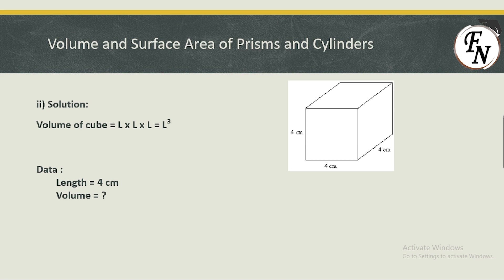When we melt the cuboid, the volume stays the same and we reshape it into multiple cubes. To find how many cubes we can get, first calculate the volume of one small cube. The formula for the volume of a cube is l³, and since all dimensions are 4 cm, the volume is 4³.